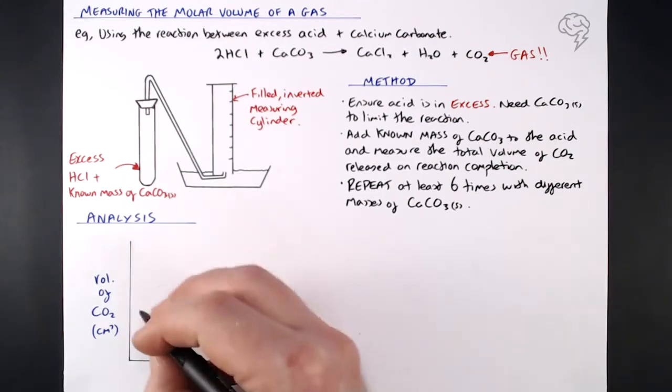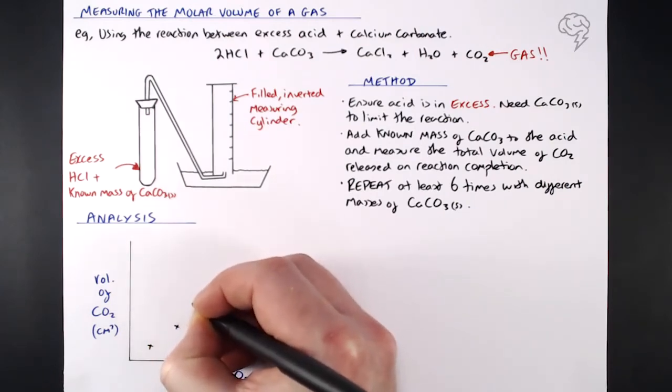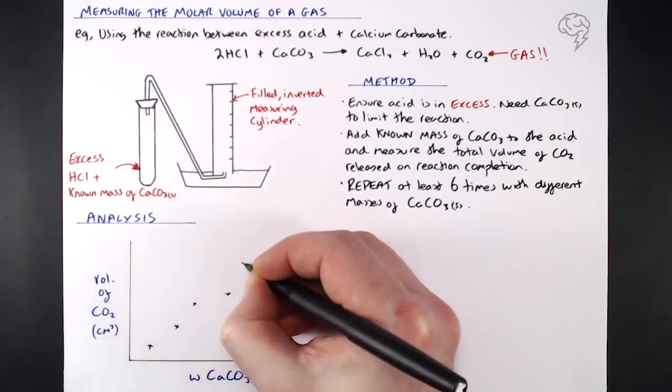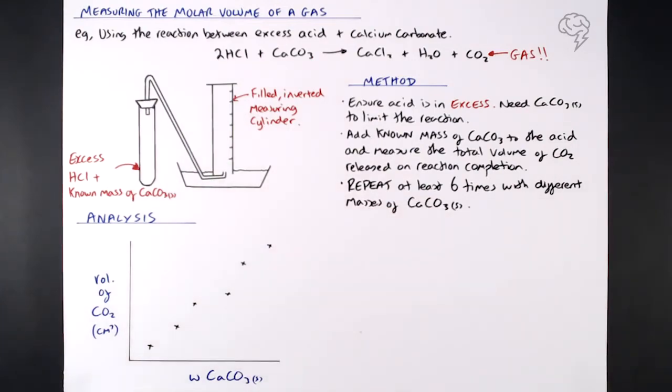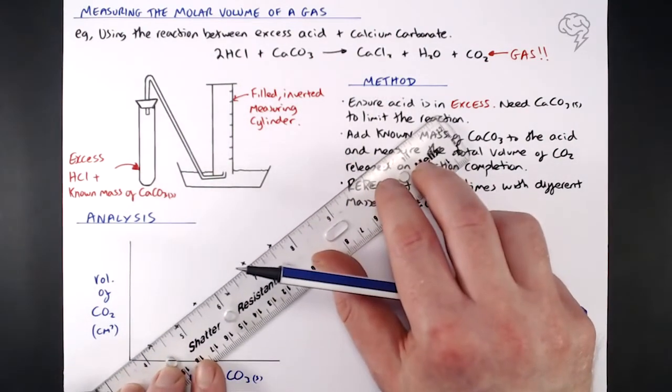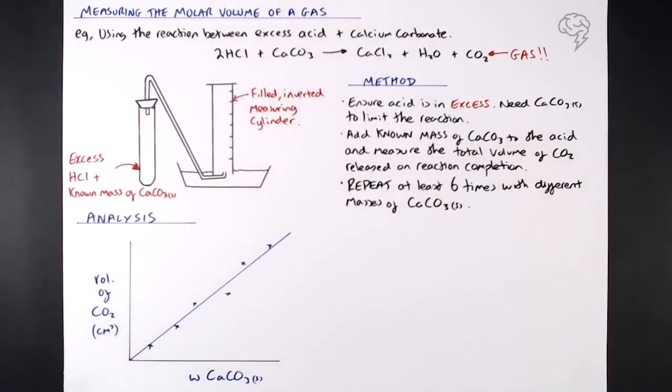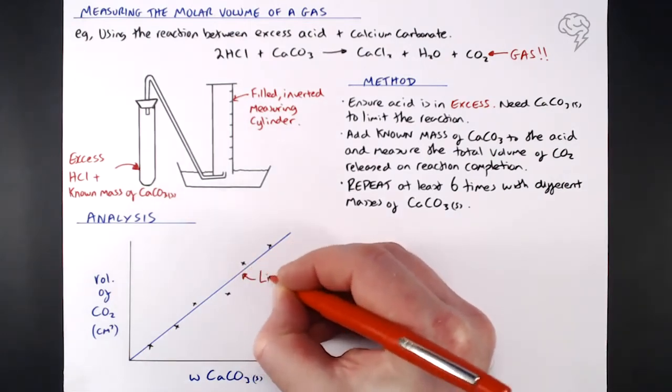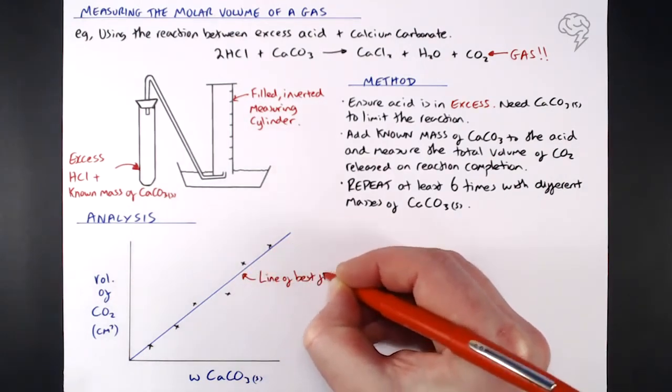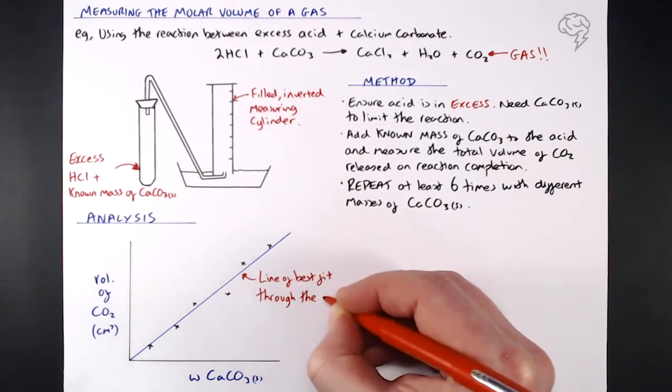We're plotting that against the mass of calcium carbonate we used in each of those experiments. We'd expect the greater the mass of CaCO3 that we use, the greater the volume of CO2 it's going to release, because it's that that's limiting the experiment. The more calcium carbonate we use, the greater the volume of CO2 released. We then go ahead and plot our results. We see this positive correlation, and what we then need to do is just draw a straight line of best fit. That's got to come from the origin because zero mass of calcium carbonate means we're not going to be producing any CO2. This is our line of best fit through the origin.